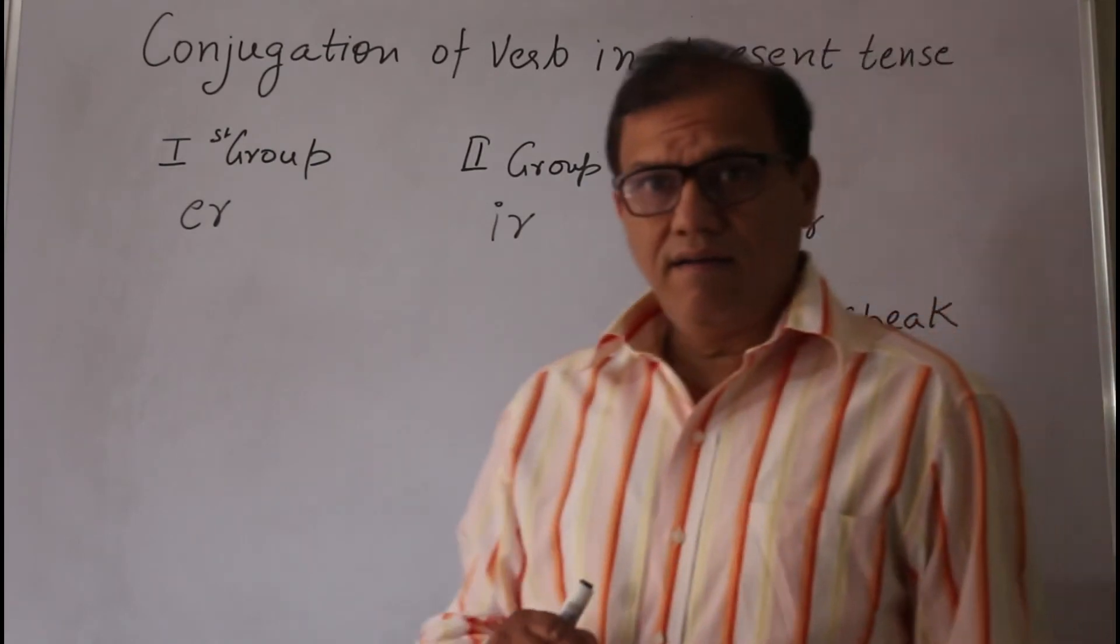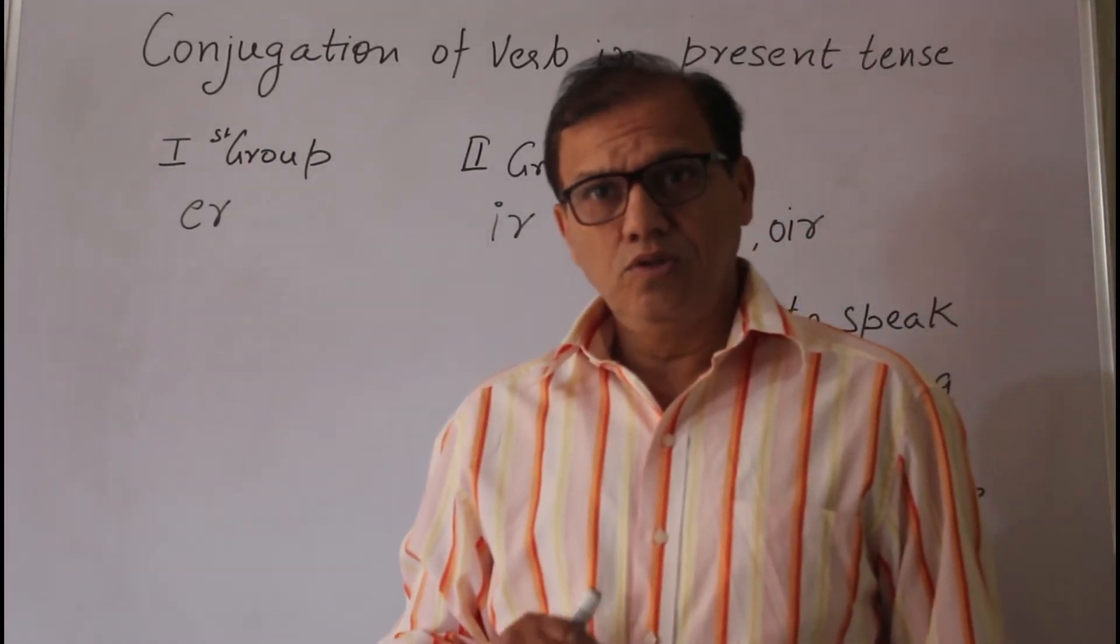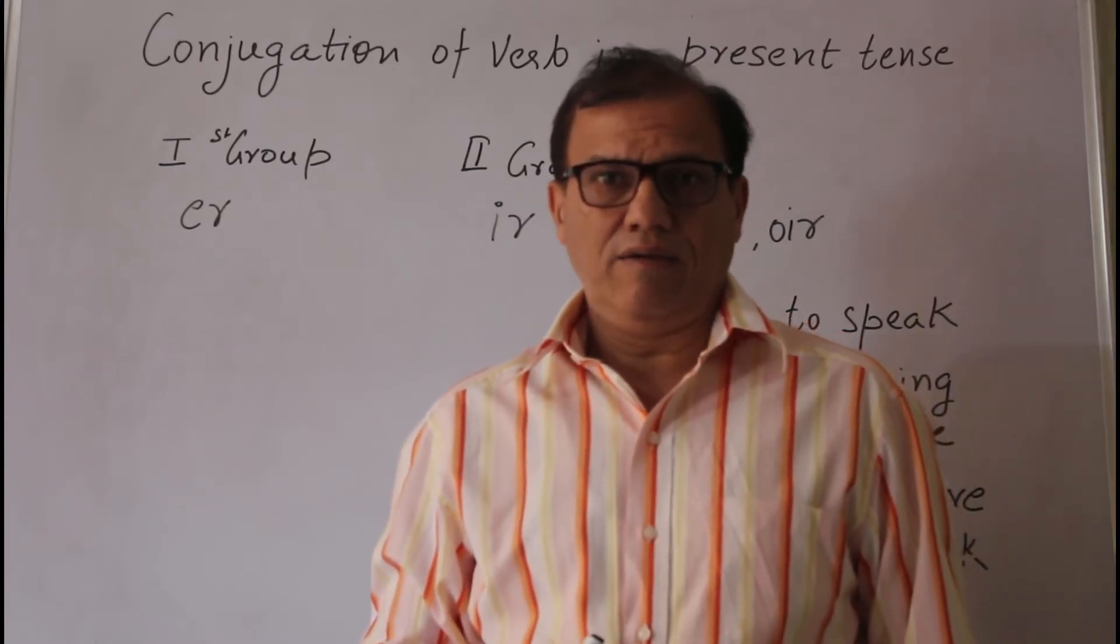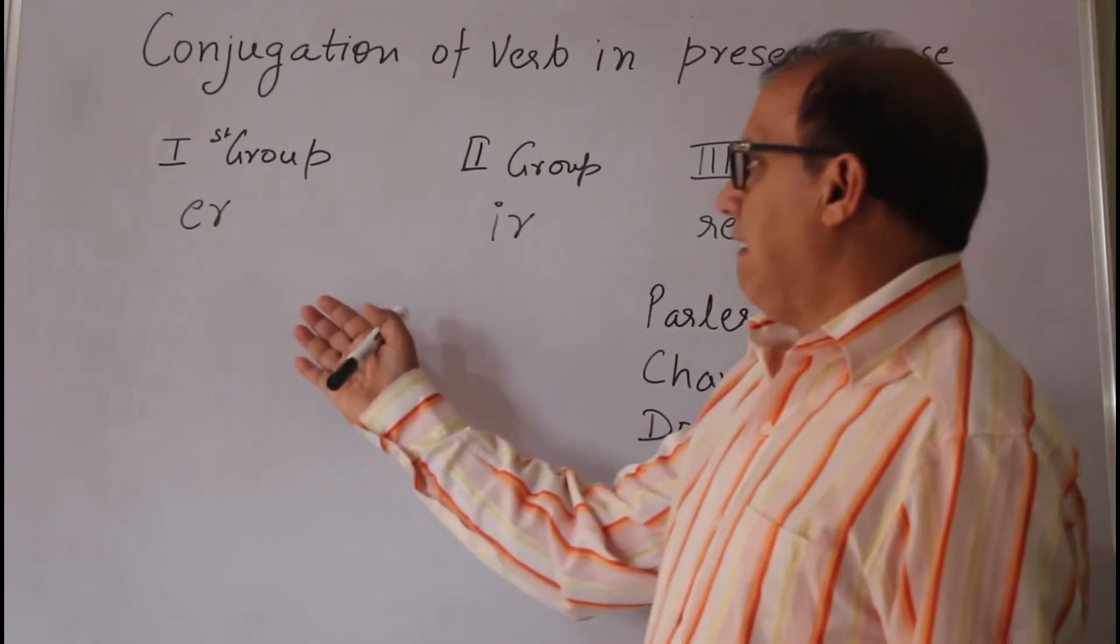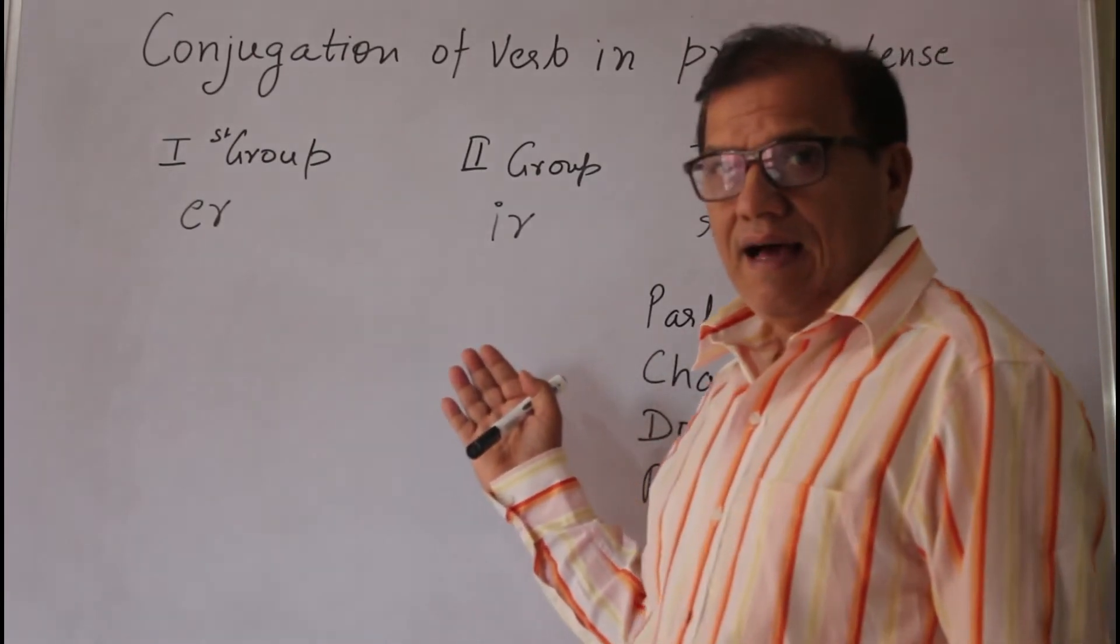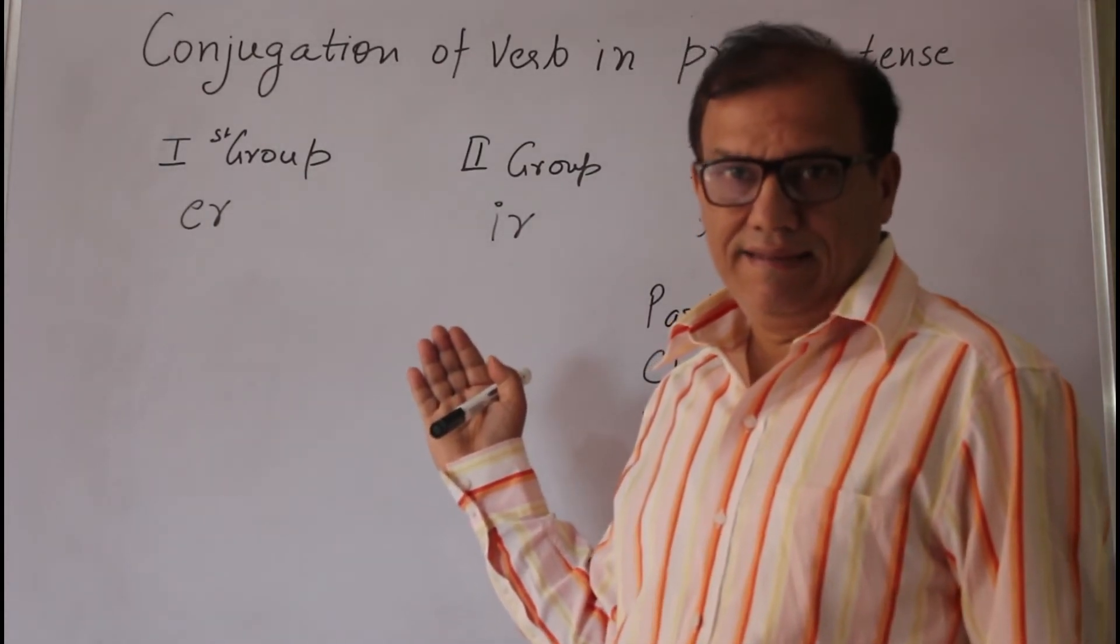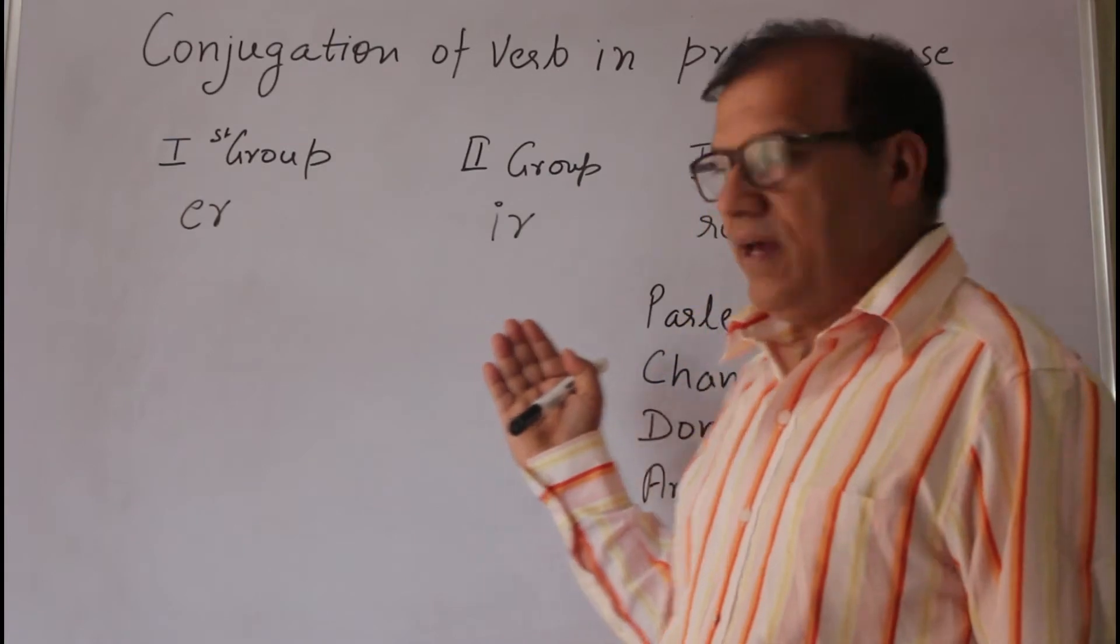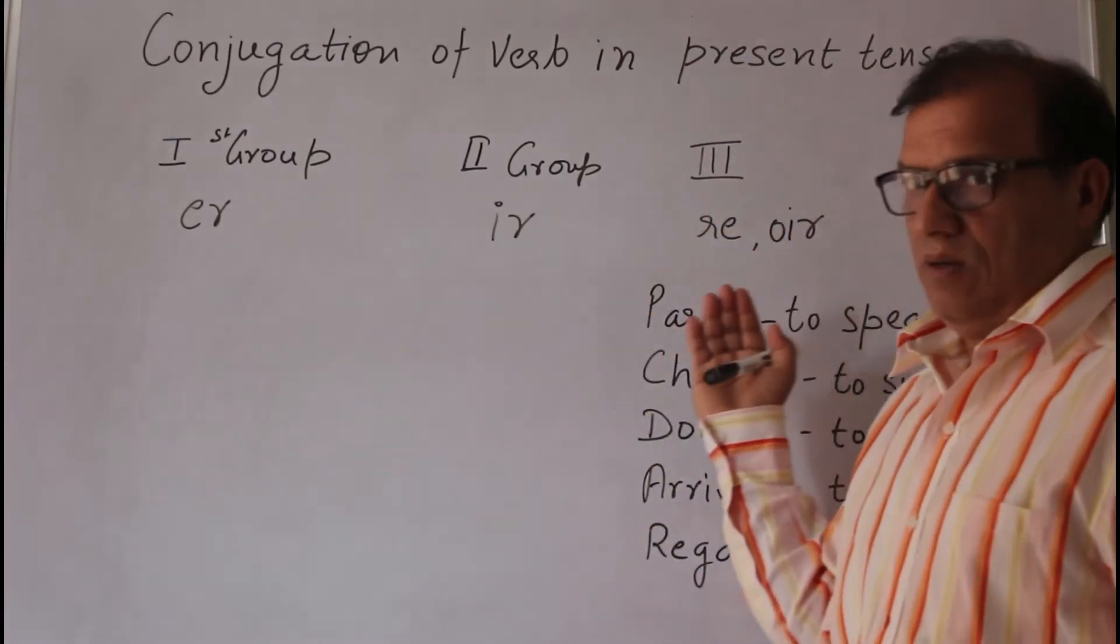Now they are further divided into two groups, that is regular and irregular. All the verbs which are ending with ER or IR have a regular ending, whereas the group third verbs are called irregular verbs.